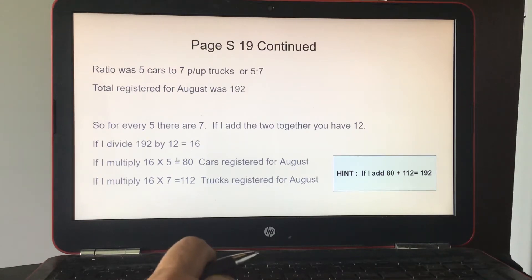So if I multiplied the per unit, 16 times 5, I would get 80 cars that were registered for August. And if I multiplied 7 by 16, I would get 112 trucks registered for August. So if they ask you the total for each one, you would have 80 cars registered, 112 trucks, and then the total is 192.